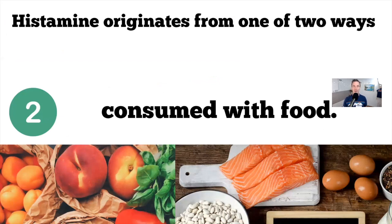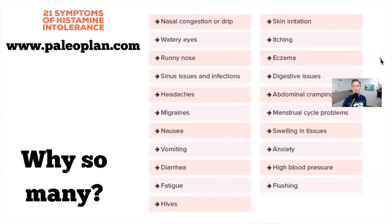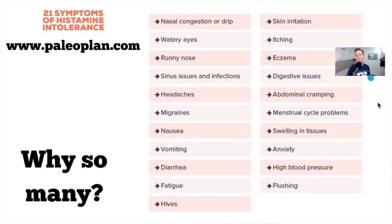The other way you can get histamine is consuming it with food. When a plant or an animal stops being alive — basically when it dies — bacteria feed on their proteins, and the byproduct of this is histamines. So we could be eating foods that contain a lot of histamines, and that will create an immune response in some people.